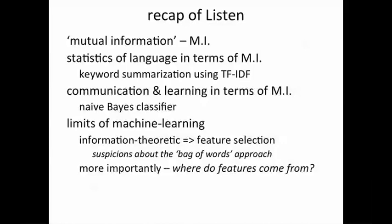In future classes, we will ask questions such as where features themselves come from. For the moment, we have chosen features like words and we have labeled past data manually or by experience, such as buyers and browsers. In our own lives, however, the labels and the features need to be derived automatically by us as we learn about the world with no supervision, or nobody telling us what's a feature and what's not.